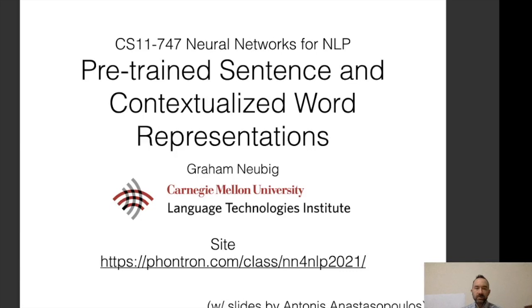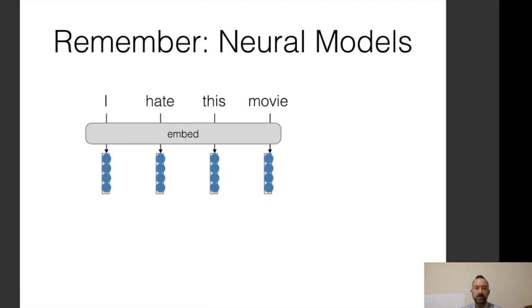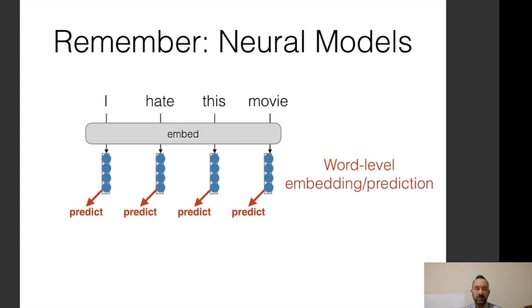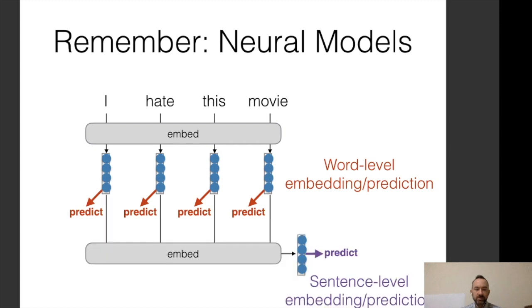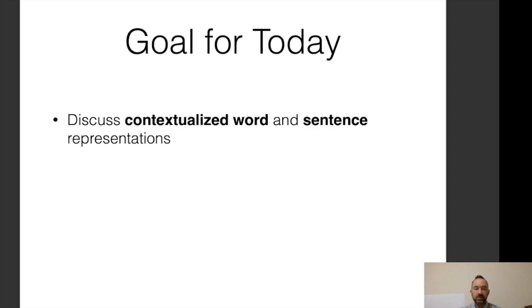Welcome to CS 11747, Neural Networks for NLP. This is Graham Newbig, and today I'll be talking about pre-trained sentence and contextualized word representations. Neural models are essentially used in NLP as ways to take in inputs such as sentences and embed them in continuous space so that they can be used for some downstream task. The goal for today is to discuss contextualized word and sentence representations, in contrast to the word representations from last time, which handled words outside of context.